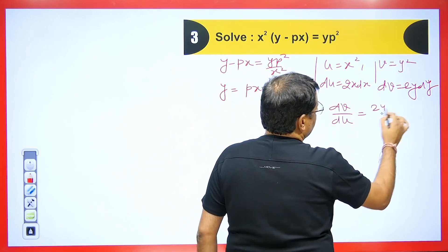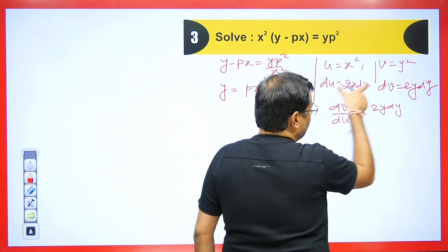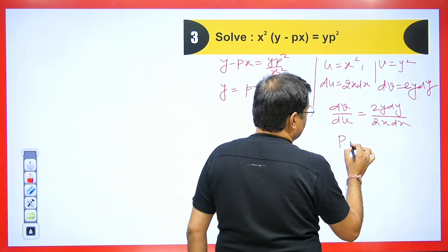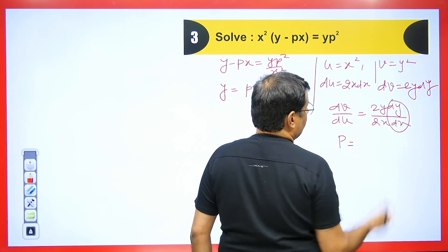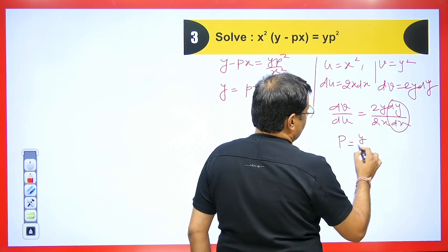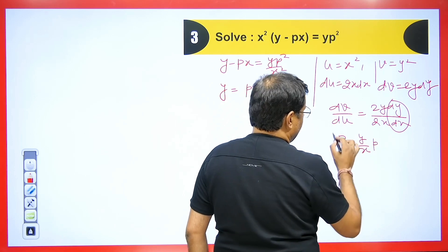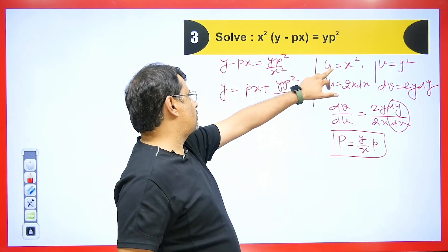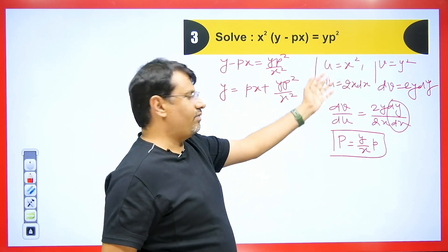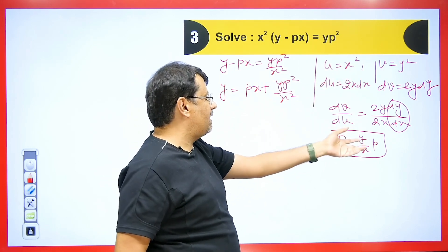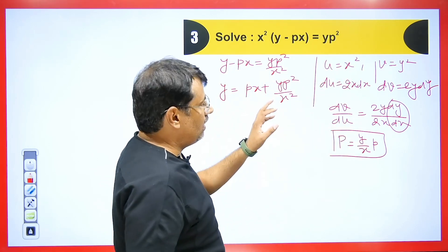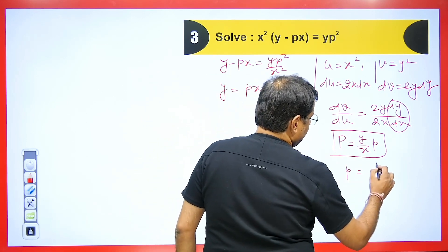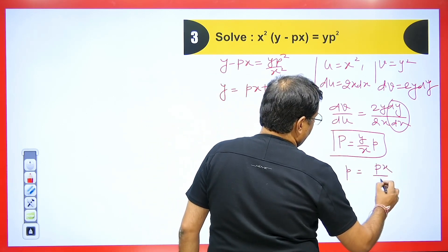So the value of small p is capital P·(x/y). Now wherever we see x² replace it with u, wherever we see y² replace it with v, and replace small p with P·(x/y). We will multiply the equation by y to obtain y² = p·xy·(x/y) + y²·p²·(x/y)²/x², preparing the substitutions.